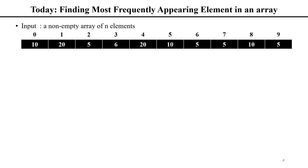Today's task is to find the most frequently appearing element in an array. For example, in this array of integers, number 10 appears three times, number 20 twice, number 5 four times, and number 6 once. So the winner is number 5. Think about if you can come up with a strategy to solve this problem in general.